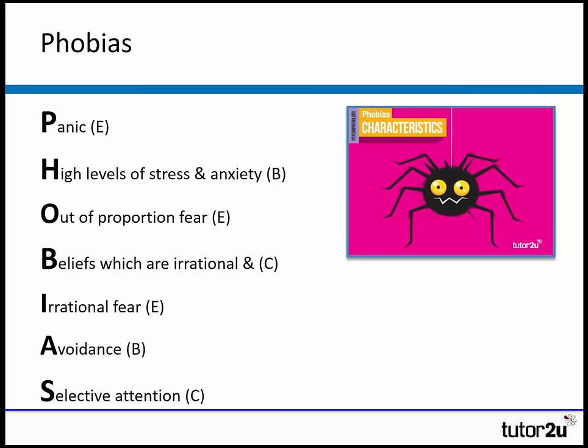P — panic, which is an emotional symptom. H — high levels of stress and anxiety, a behavioural symptom. O — the fear is often out of proportion to the reality; if you have a phobia of spiders, the fear is out of proportion. B — irrational beliefs, and I — irrational fear, cognitive and emotional characteristics. A — avoidance, a behavioural characteristic. S — selective attention, where people direct their attention towards these objects, a cognitive characteristic.